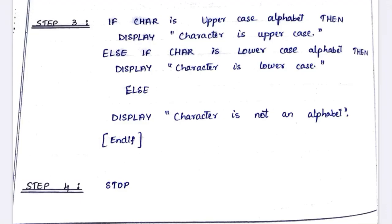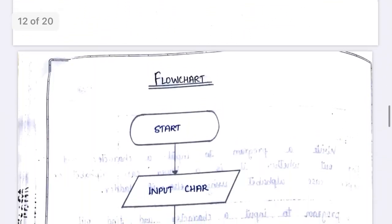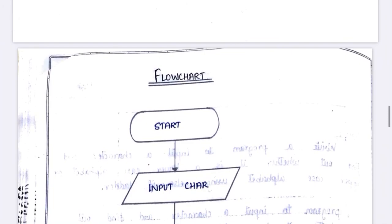Here directly in the logical part itself we are telling what to display, so that's why we don't have a separate step four to display anything. In step three only we have displayed the output, so lastly Stop — that is your step four. Next we are going to see the flowchart.